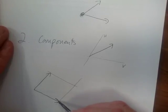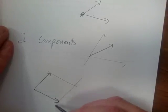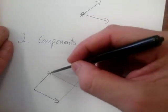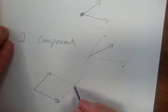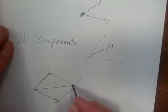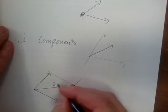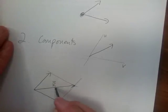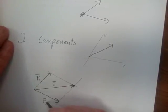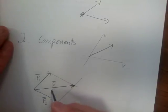From the head of this force vector I draw a line parallel to that force vector, and from the head of this force vector I draw a line parallel to the other force vector. And where they cross, I draw a line from this vertex to this vertex, and this becomes my resultant — my resultant force vector.